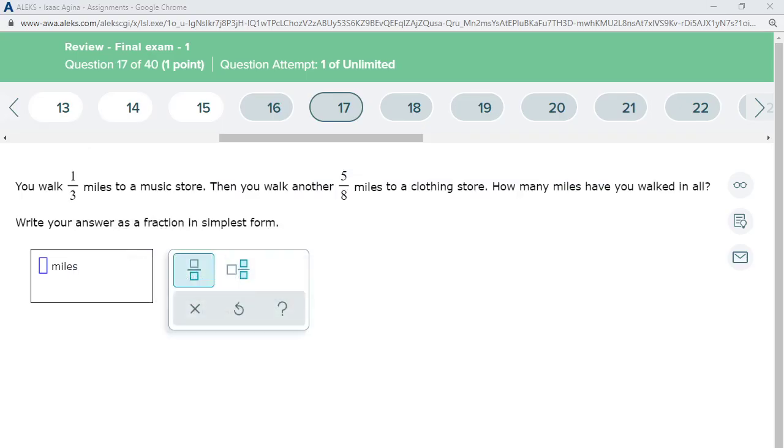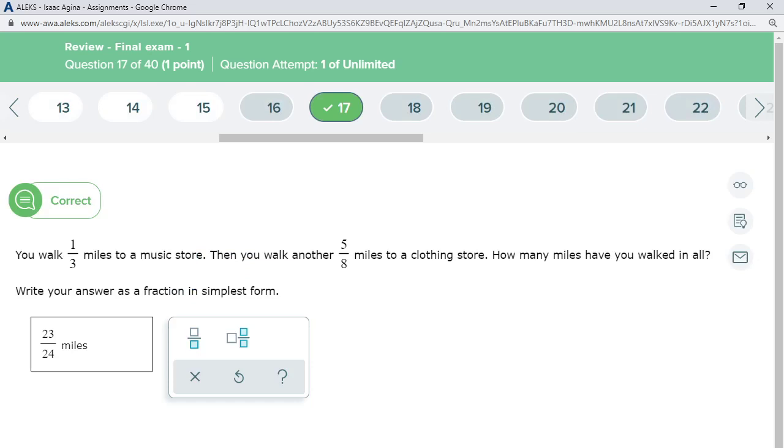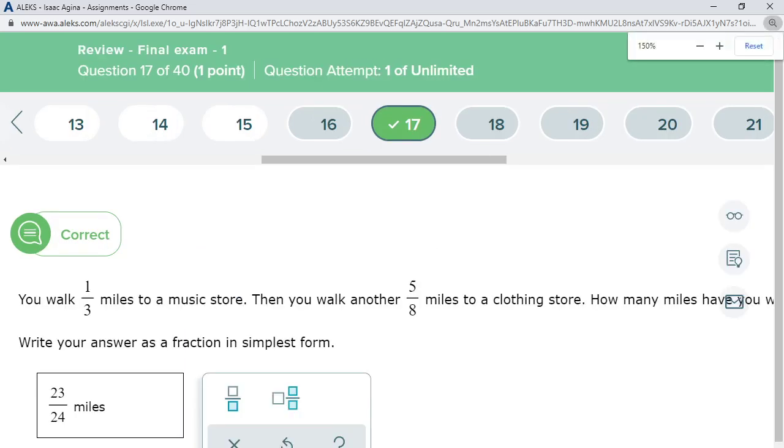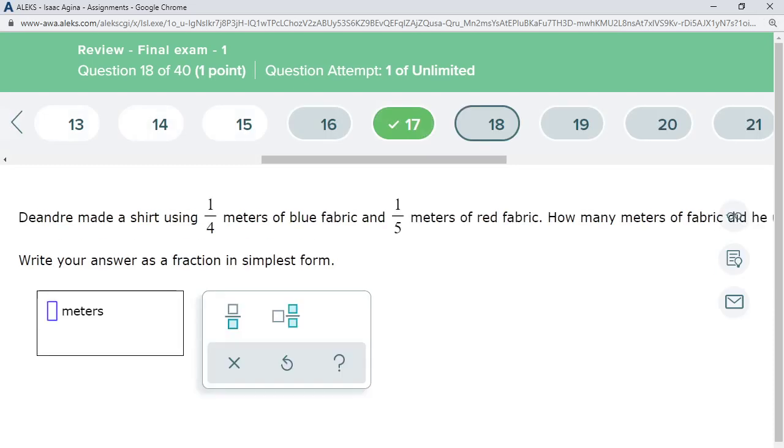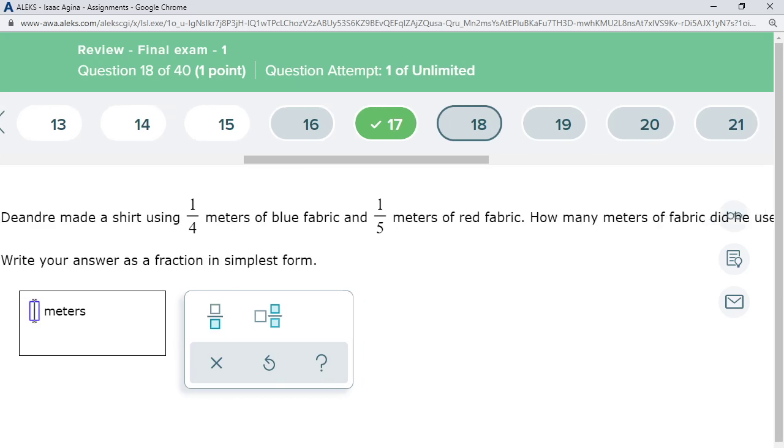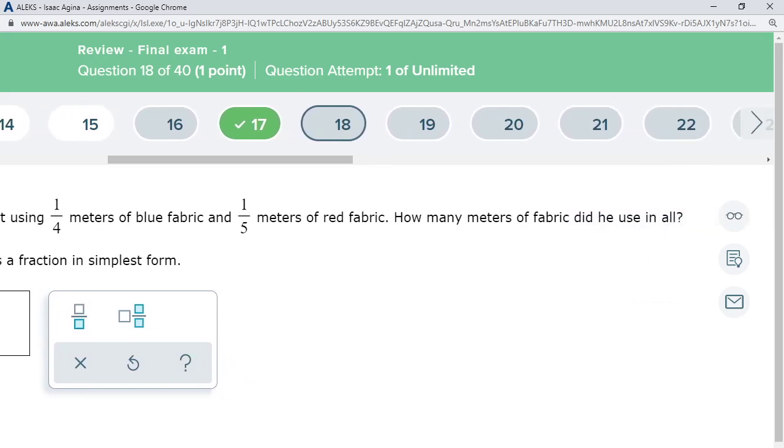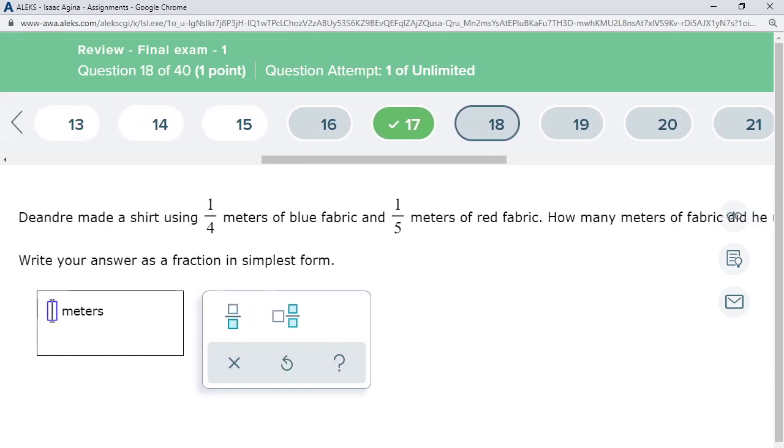So you just type it in here, 23 divided by 24, and check. The next question also requires the same approach. D'Andre made a t-shirt using 1/4 meters of blue fabric and 1/5 meters of red fabric. How many meters of fabric did he use in all? Write your answer as a fraction in simplest form.